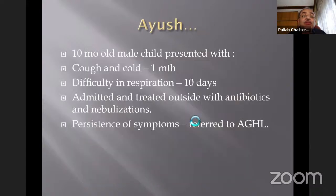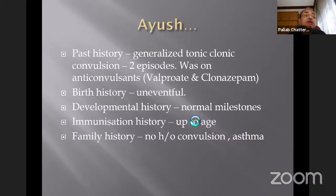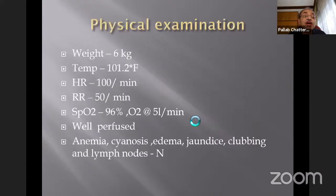Ayush, a 10-month-old male child, presented with cough and cold for one month, and difficulty in respiration for 10 days. He was admitted and treated outside with antibiotics and nebulizations, but had persistence of fever and was referred to our hospital. He had a history of convulsions unrelated to this episode. Birth and development history were normal. Immunization was up to date. Family history of asthma. On examination, the child had poor weight, high temperature, tachypnea with respiratory rate around 50.